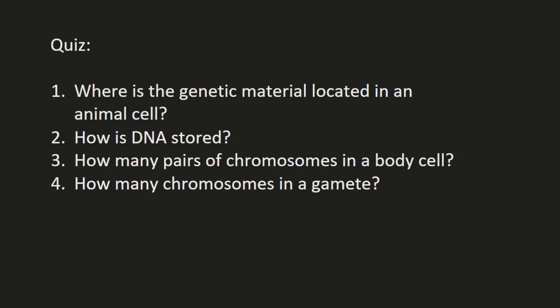Here are some questions — feel free to pause the video and have a go, then come back for the answers. Question one: where is the genetic material located in an animal cell? That is located in the nucleus. Question two: how is that genetic material actually stored? DNA is stored in structures called chromosomes.